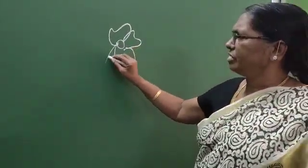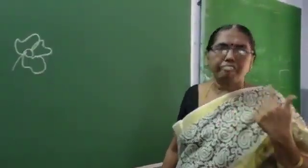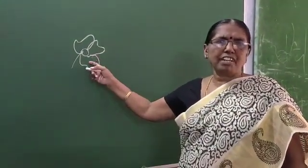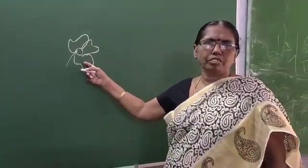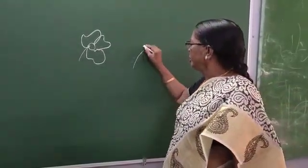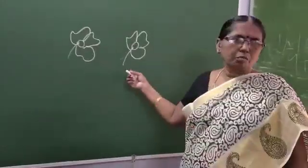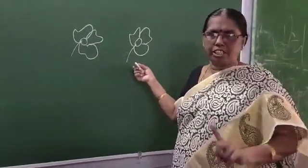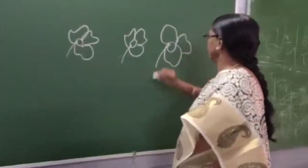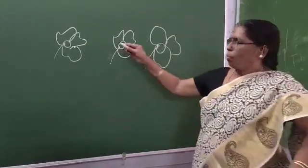Suppose, what is this? What is this? Yes, it is a flower. How many flowers? How many flowers can you see on the board? Yes, only one flower. Then, how many flowers are there? Again, one flower on the board. So, how many flowers are there? One.